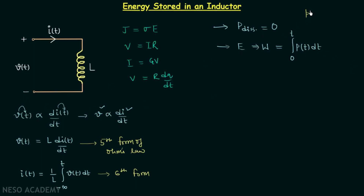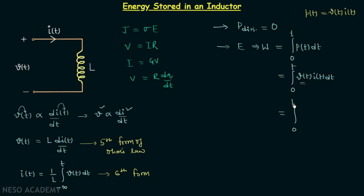We will try to calculate the work, and once we have the work we will have the total energy stored in the inductor. We know work = ∫(0 to t) p(t) dt, and we have derived that power equals voltage multiplied by current. So in place of p(t) we write V(t)·I(t), giving work = ∫(0 to t) V(t)·I(t) dt. Since V(t) = L·di(t)/dt from the fifth form, we substitute to get work = ∫(0 to t) L·di(t)/dt · I(t) dt.